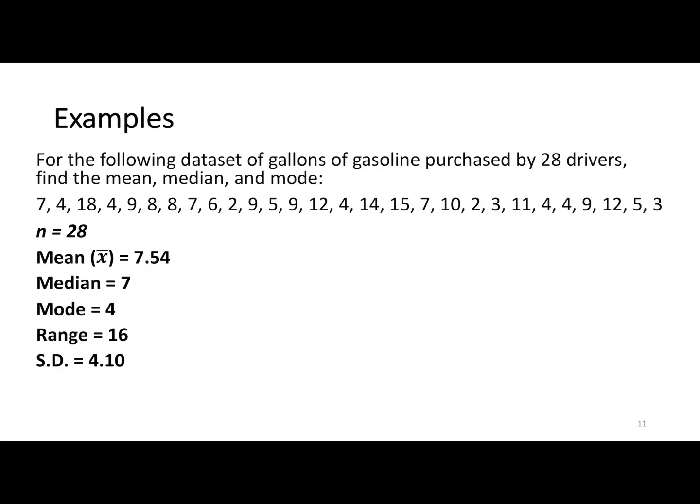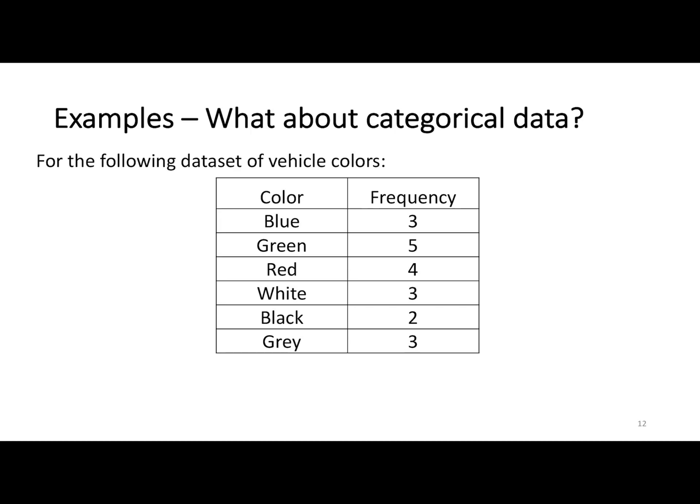This final example: the last three examples had quantitative data - gallons of gas purchased, T-shirts sold per week, contract size. Those are all values you can perform operations with. With categorical data, let's see if we can do the same thing. We know we've got 20 vehicles because the frequencies add up: 3 blues, 5 greens, 4 reds, 3 whites, 2 blacks, 3 grays.